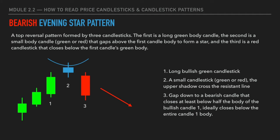Now let's look at the opposite version — the bearish evening star pattern. Similar to the morning star, the bearish evening star is also formed by three candlestick bars: the first is a long green bar heading toward the resistance level; the second is a small bar whose upper shadow crosses above the resistance level but fails to break it — this bar can be either green or red; and the third is a bearish red bar with a long real body that closes below at least half of the first green bar's real body. The bearish evening star is considered a top reversal pattern.